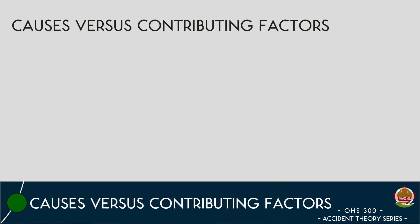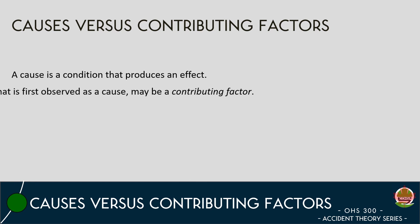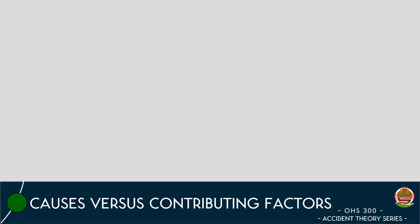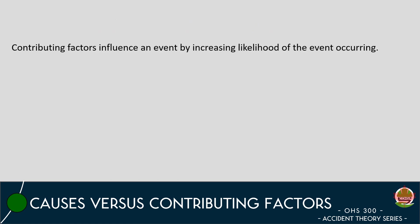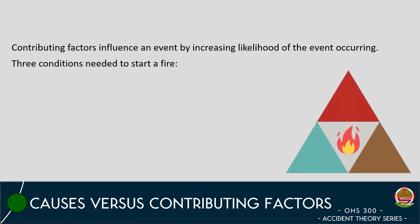One of the main points that can be concluded from the last five episodes in the accident theory series is that a cause is a condition that produces an effect. Unfortunately, it is not as simple as finding a cause and connecting it to an effect to determine why something has occurred. This is because sometimes what we view as a cause is actually a contributing factor. Contributing factors are conditions that influence an effect by increasing the likelihood of the effect occurring.